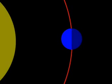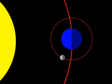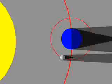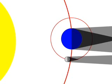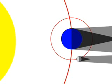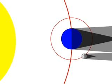As the Earth orbits around the sun, the sun shines on it and on the moon. But the Earth casts a shadow, just like you do when you stand outside on a sunny day. So a lunar eclipse is what we see when the full moon moves into the Earth's shadow.